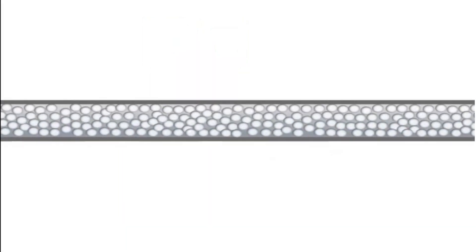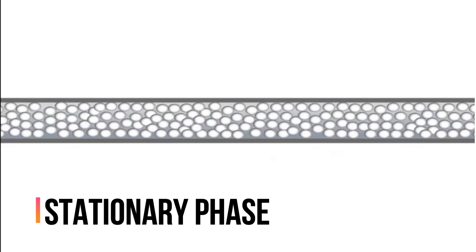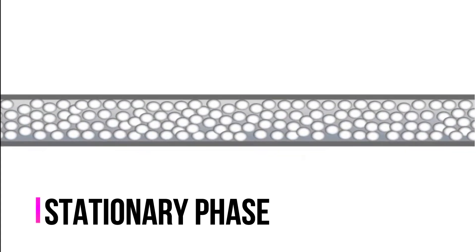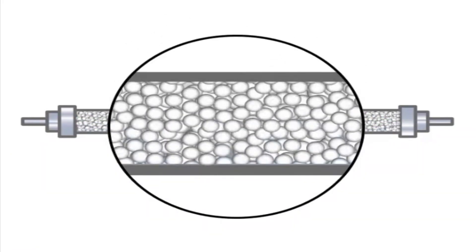In column chromatography, a column is packed with micro-scale beads called the stationary phase. This video will introduce the basics of the operation of HPLC by demonstrating the caffeine standard injection and studying the efficiency of column HPLC.